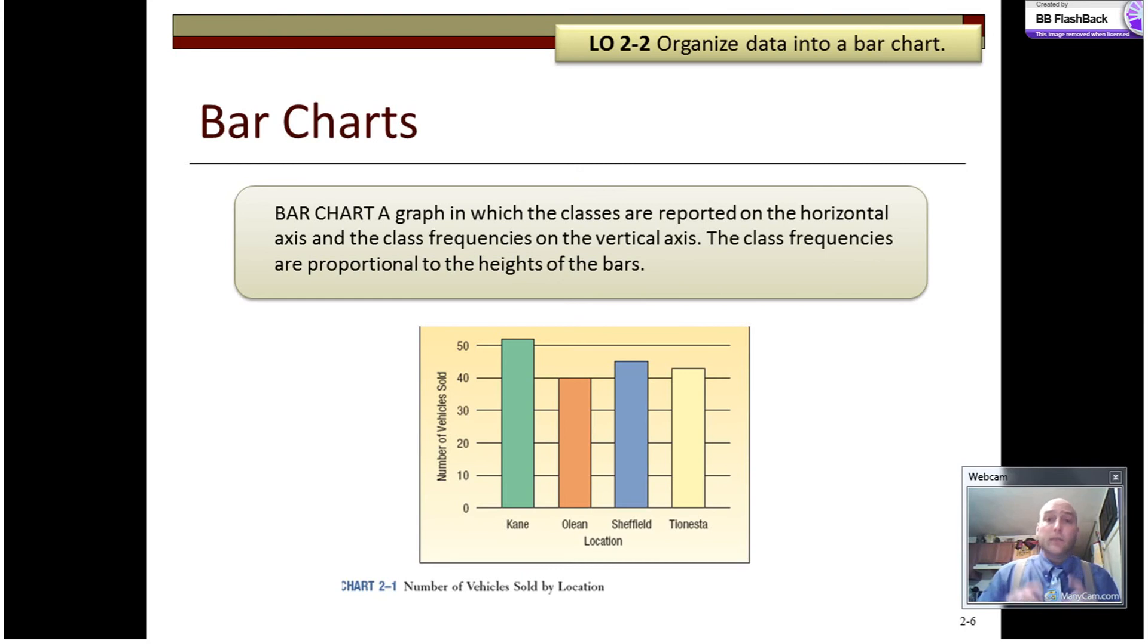Qualitative data can be summarized using bar charts. A bar chart is a graph in which the classes, so each of those four different locations, are reported on the horizontal axis. The class frequencies, or the count, gets reported on the vertical axis. The class frequencies are then proportional to the height of the bars. There's a number of different ways that bar charts can be represented. We can change the width of the bars. We can change the scaling on the y-axis. I'm about to show you a number of them right now.